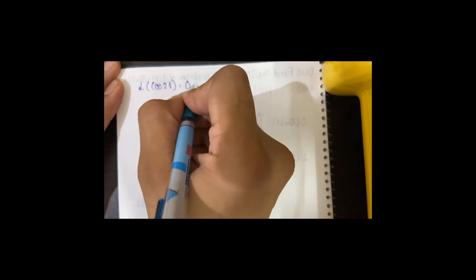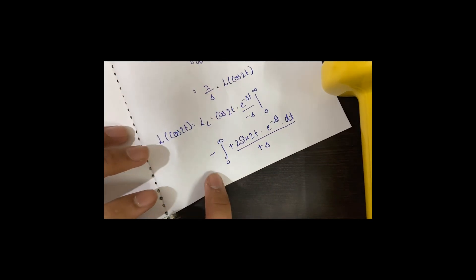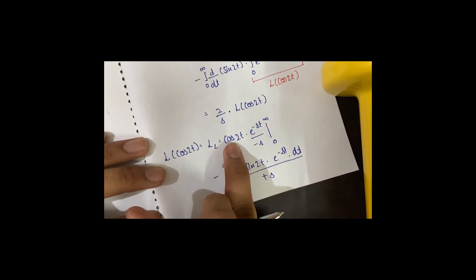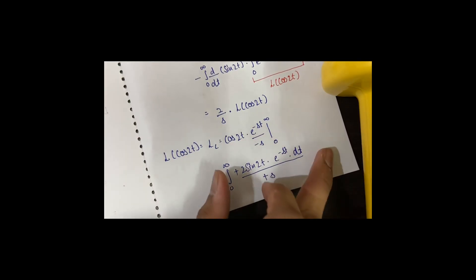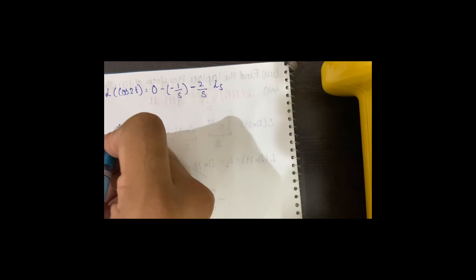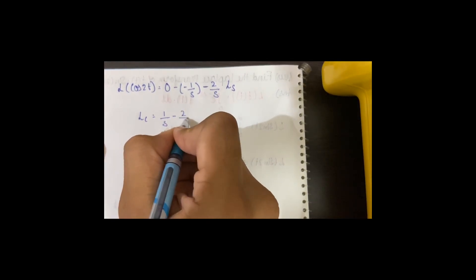Evaluating the boundary term: when t goes to infinity the exponential makes the term go to 0, and when we substitute t equals 0 we get minus 1 over s. So the boundary term gives 0 minus (minus 1 over s), which equals 1 over s. Therefore LC equals 1 over s minus 2 over s times LS.